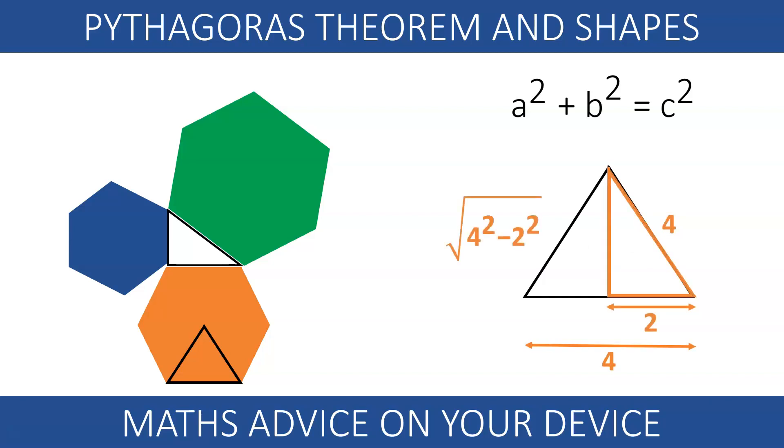The height is the square root of the difference of the squares. The area of the orange hexagon is 6 times the base times the height divided by 2. Something similar happens with the blue and the green hexagons.